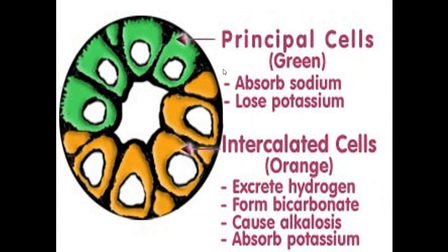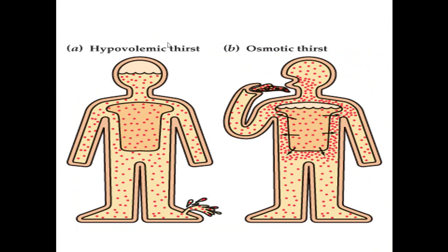Here you can see a cross-section of the distal convoluted tubule and the medullary collecting ducts. The green ones are the principal cells — 90 percent of this area, including the distal convoluted tubule, contains principal cells. These principal cells function to absorb sodium and water and to lose potassium. These principal cells are the site of action of both aldosterone and ADH. So principal cells are responsible for the reabsorption of water and sodium.